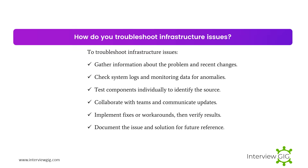How do you troubleshoot infrastructure issues? To troubleshoot infrastructure issues: gather information about the problem and recent changes; check system logs and monitoring data for anomalies; test components individually to identify the source; collaborate with teams and communicate updates; implement fixes or workarounds and verify results; then document the issue and solution for future reference.